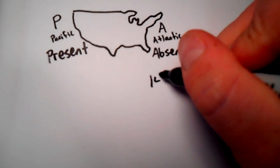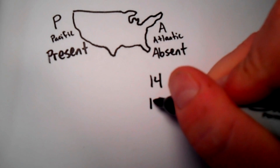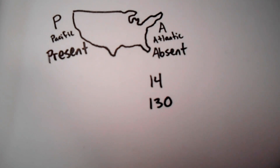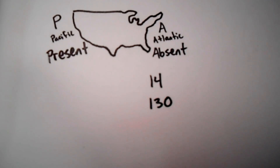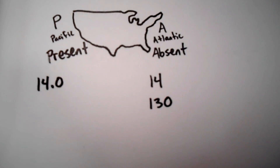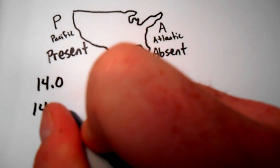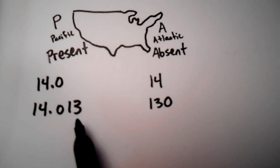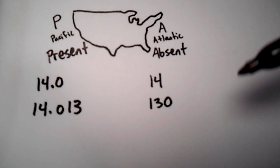When we write normal numbers like 14 or 130, we don't necessarily show a decimal because we're not showing any tenths or hundredths. In these cases, the decimal is absent. On the left-hand side is where things would be present — so if I had a decimal present, like 14.0 or all the way out to 14.013, that's a really precise measurement with lots of decimal places.